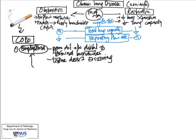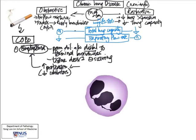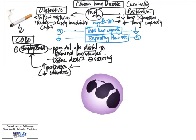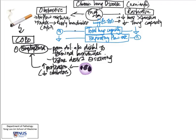Emphysema is usually a result of an imbalance between proteases and protease inhibitors — there is a relative increase in proteases because of a decrease in inhibitors, or simply increased production of proteases. The cells that produce proteases are neutrophils, one of the key inflammatory cells in acute inflammation. Tobacco from cigarette smoke triggers an inflammatory response, giving rise to increased production of proteases from neutrophils.